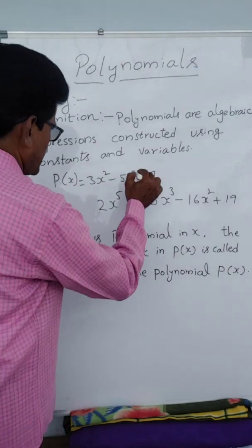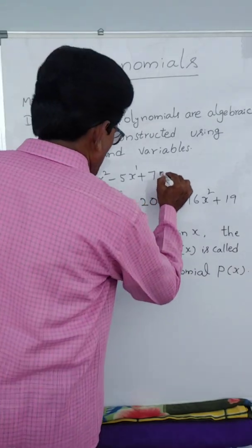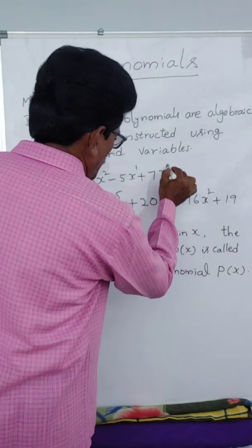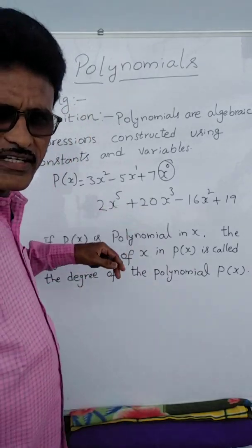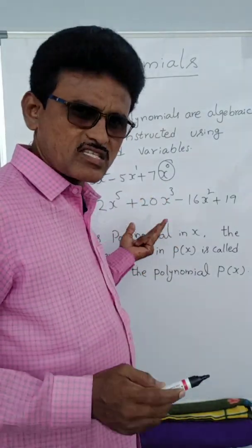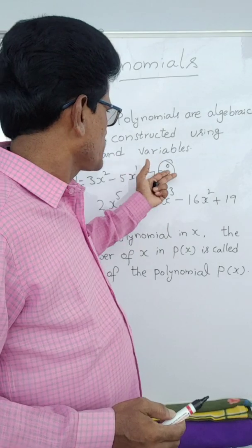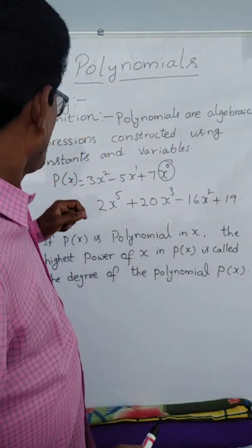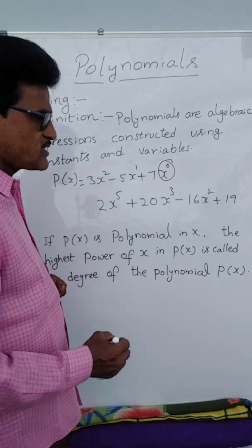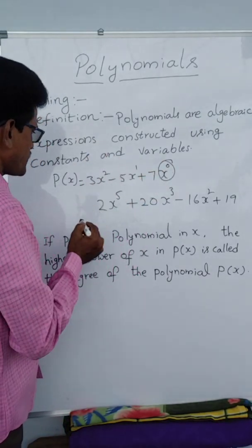Here x power is 1, here x power is 2, and 7 is 7x to the power of 0 — but we won't write this. Why? Because x to the power of 0 equals 1, so 7 times 1 is 7 only. So we don't write x to the power of 0. In 3x² minus 5x plus 7, the highest power is 2.